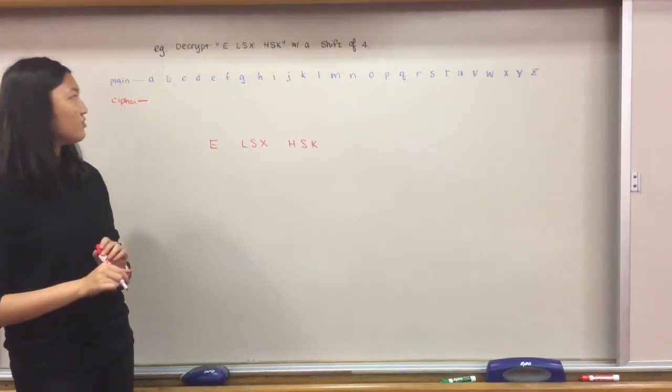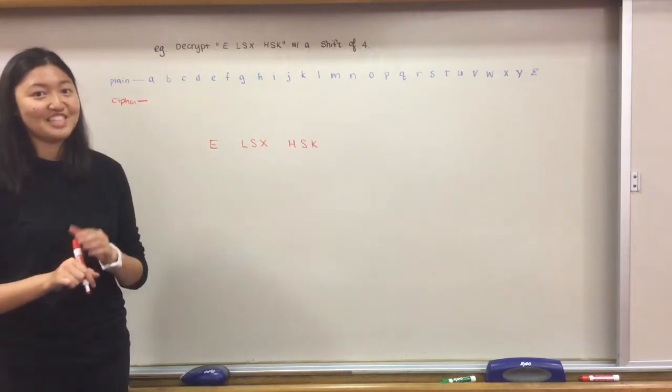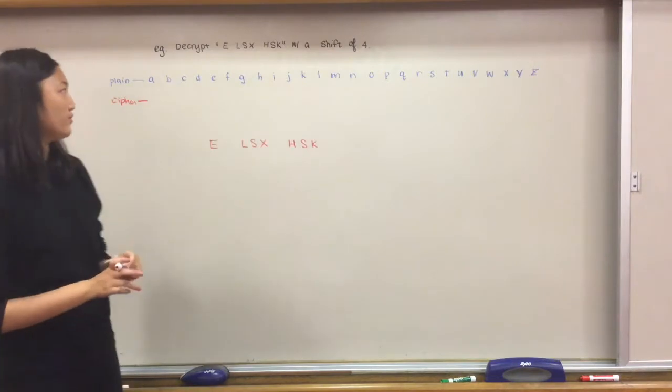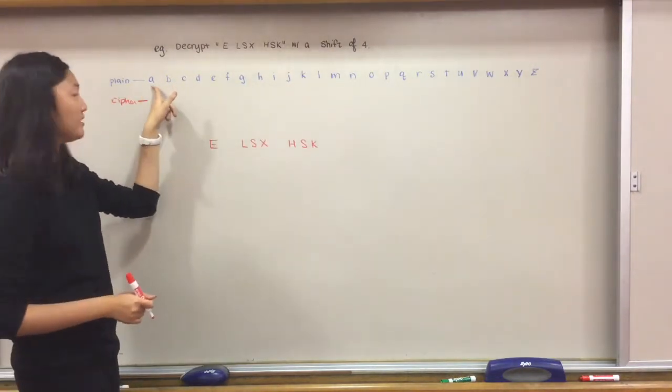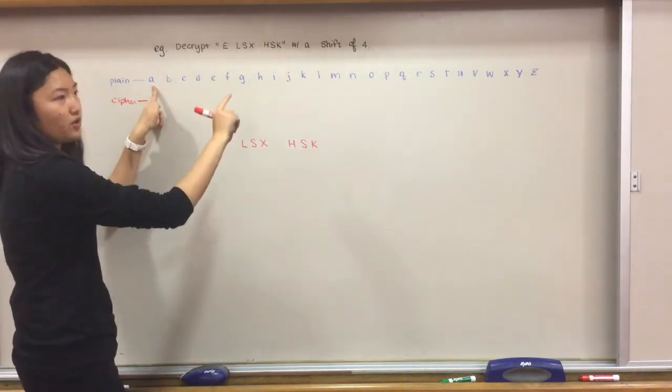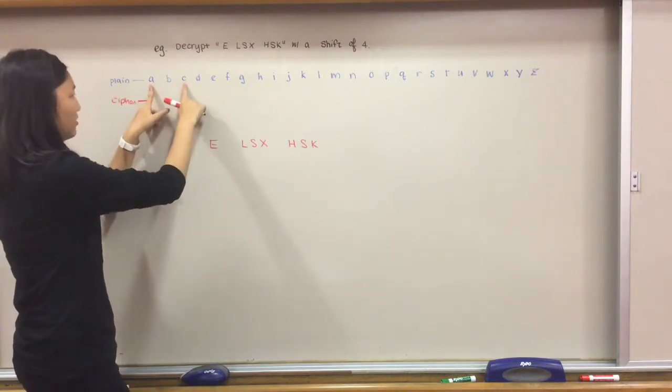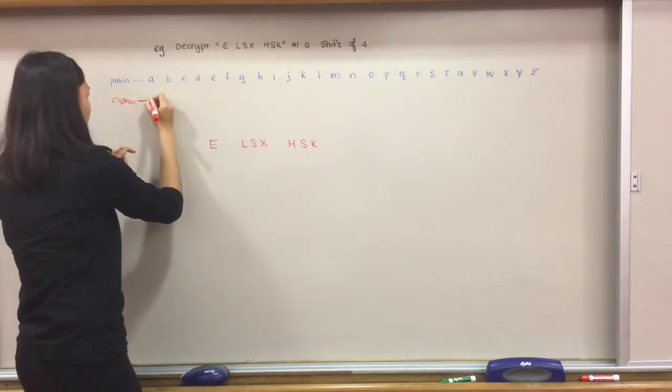Now we're going to move on to an example of decryption. We're going to start with the same thing, but this time it's with a shift of four, so if we start with the plain text, we're going to move over four letters to the right. So for a, we're going to go one, two, three, four, so a maps onto e.